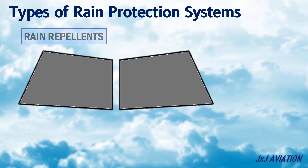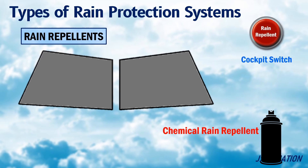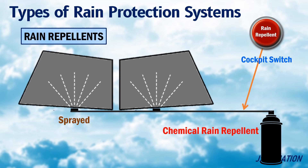Rain repellents. A chemical rain repellent may be used to improve the windshield visibility during heavy rains. The repellent is sprayed on the windshield by a switch in the cockpit. A fixed quantity of repellent is sprayed, which spreads over the windshield. This repellent prevents rainwater from sticking on the windshield surface, which improves the visibility.